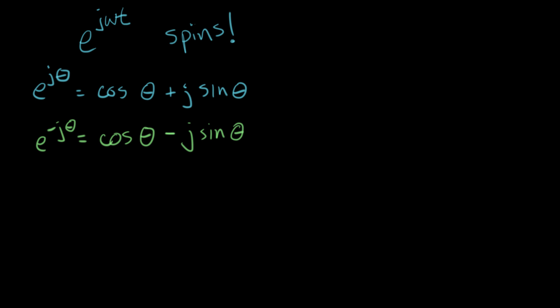Now if I plot this, what it looks like is this. So if I plot this on a complex plane, that's a plane that has a real axis and an imaginary axis.